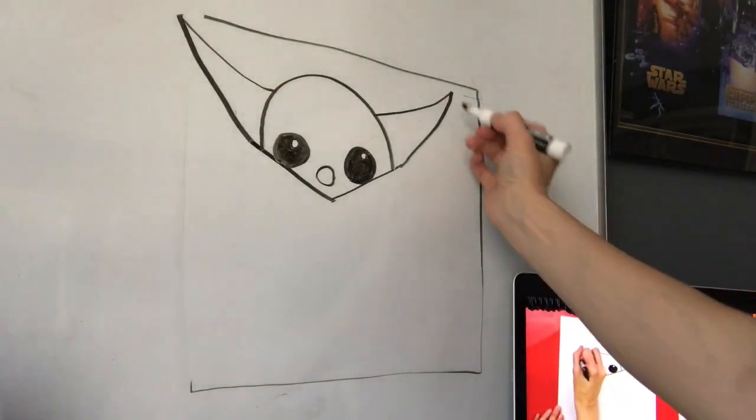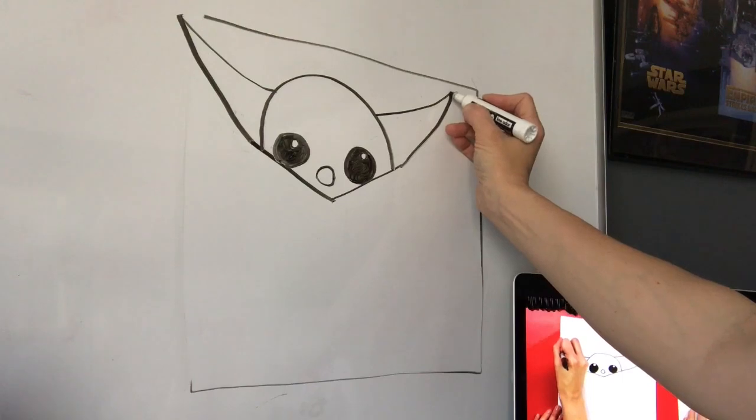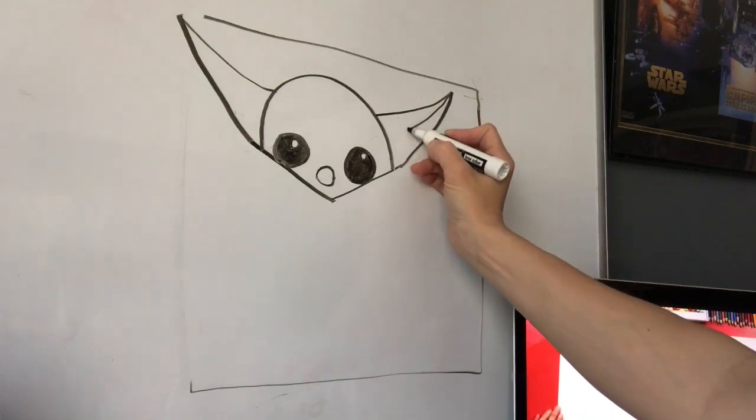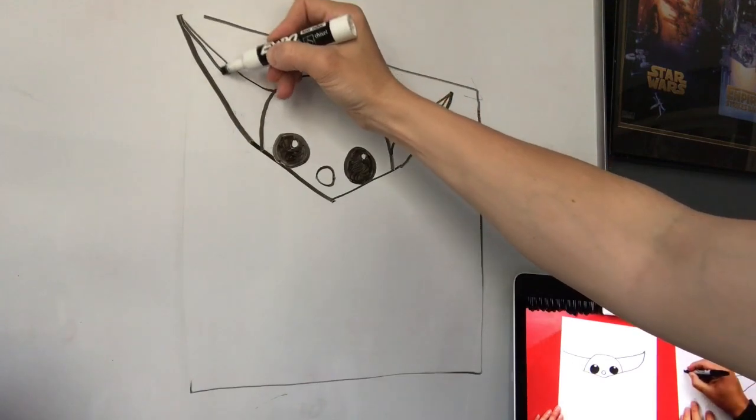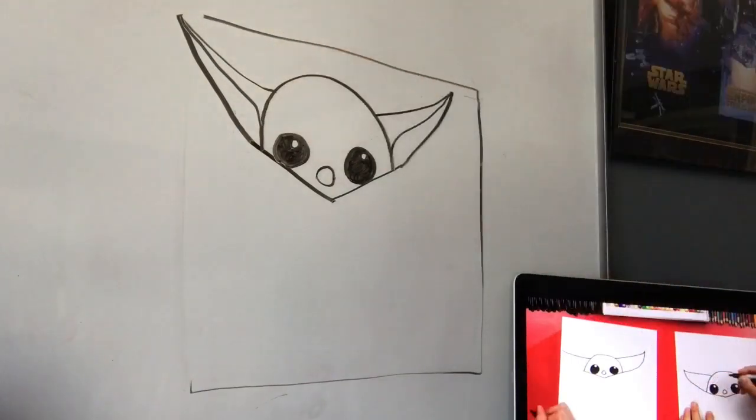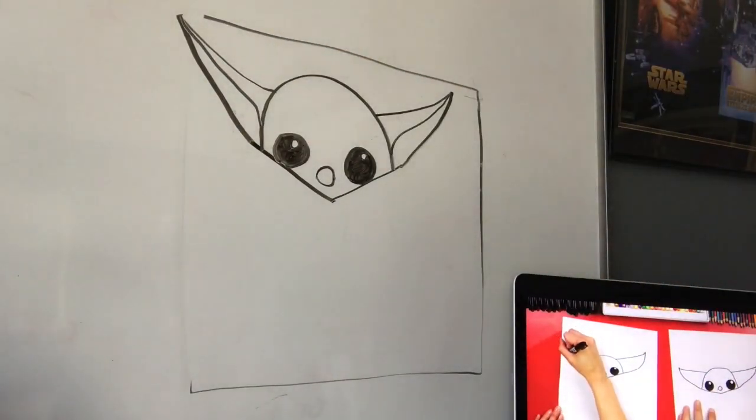Then we're going to do the inside of the ear. So come up to the top, down, and curve it down like that. Bring it down and go down at the end. There you go.